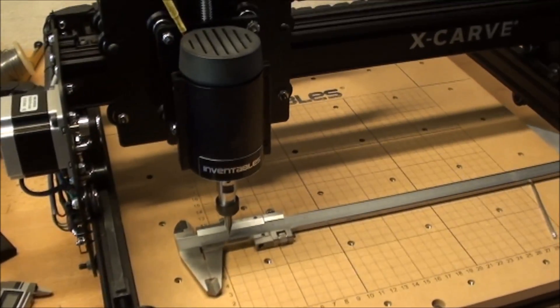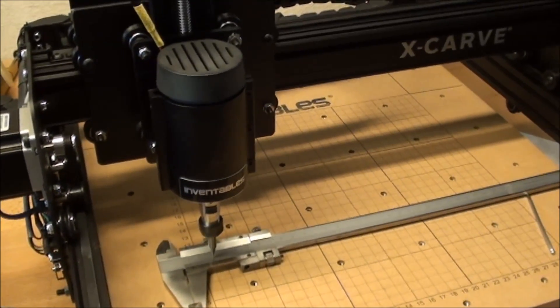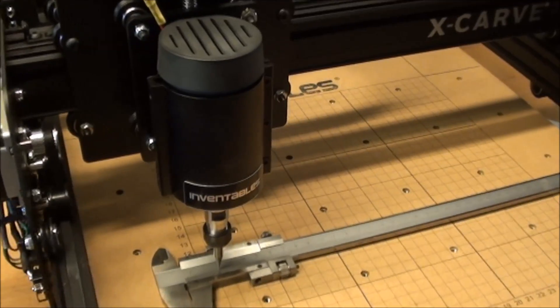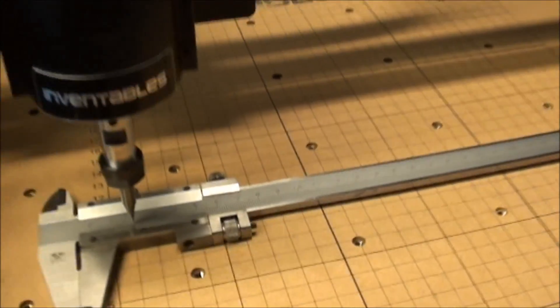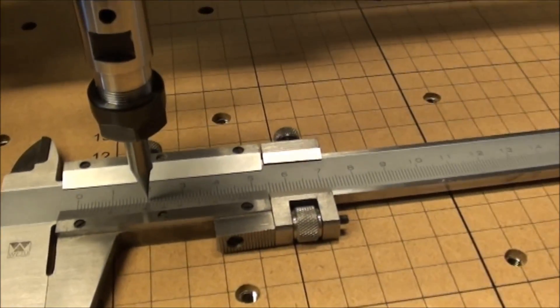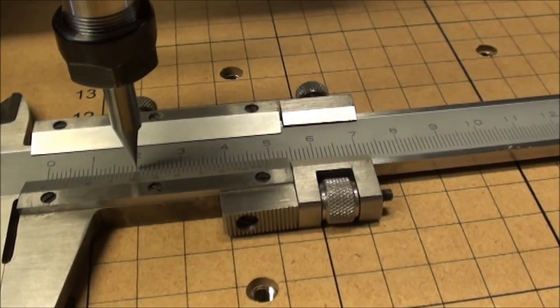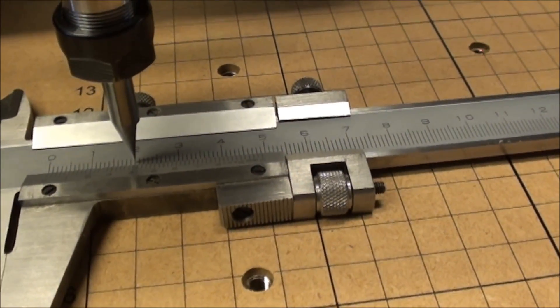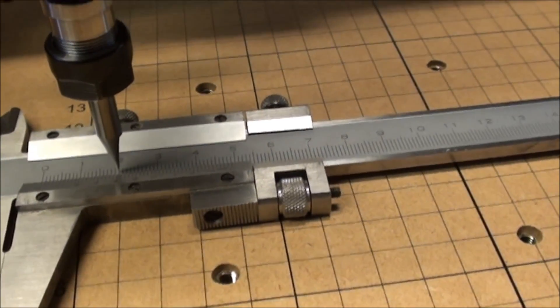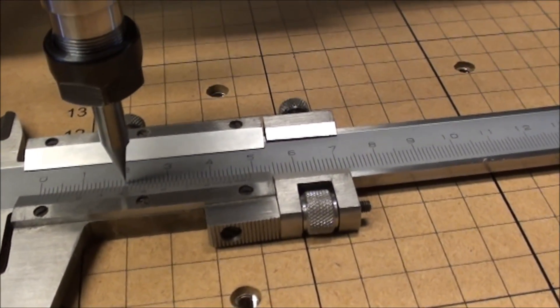To calibrate the machine, one way to do it is to ask it to go a specific amount of millimeters and then measure. Here I have a 30 centimeter long caliper so I can measure how it will actually do and then adjust the parameter accordingly.